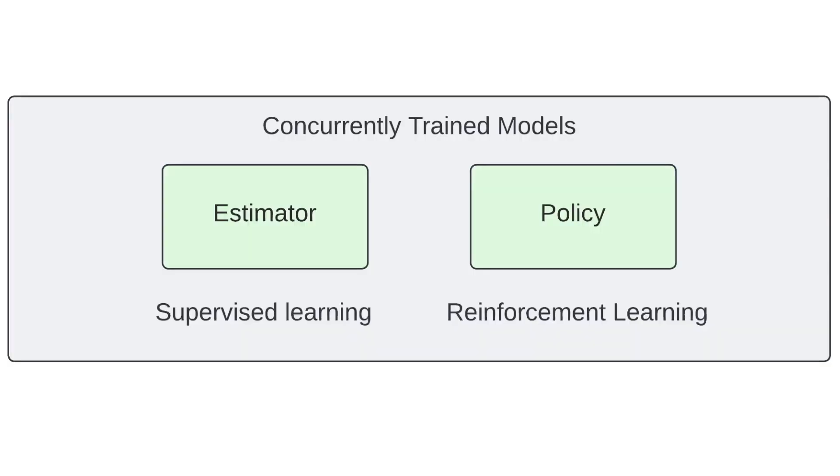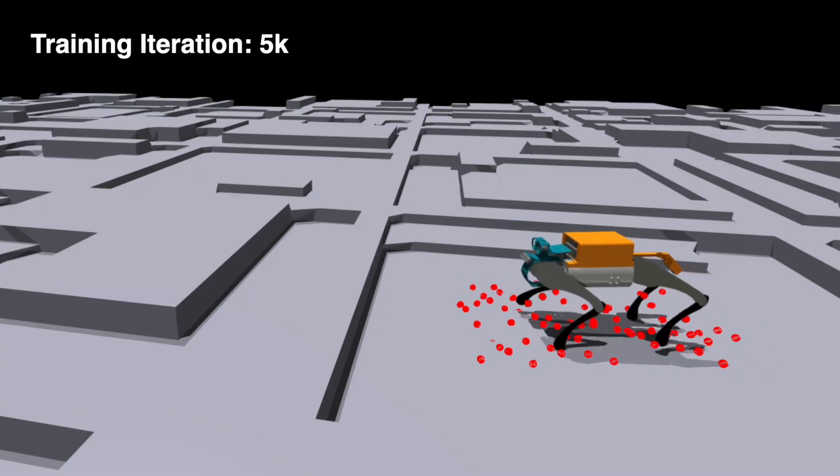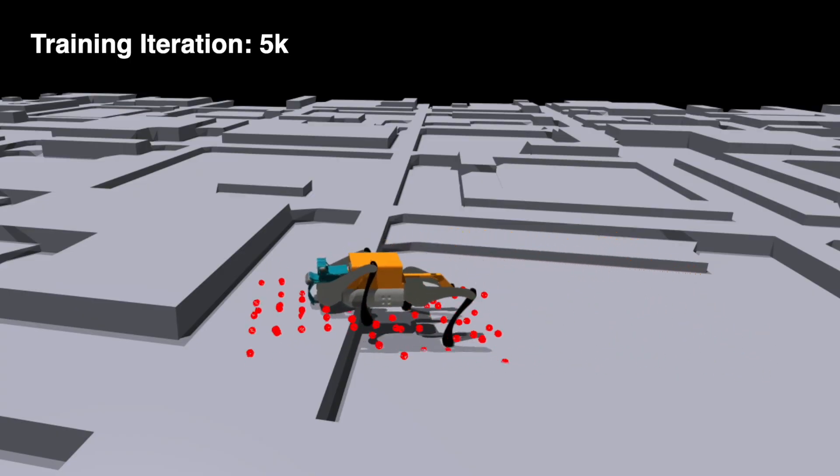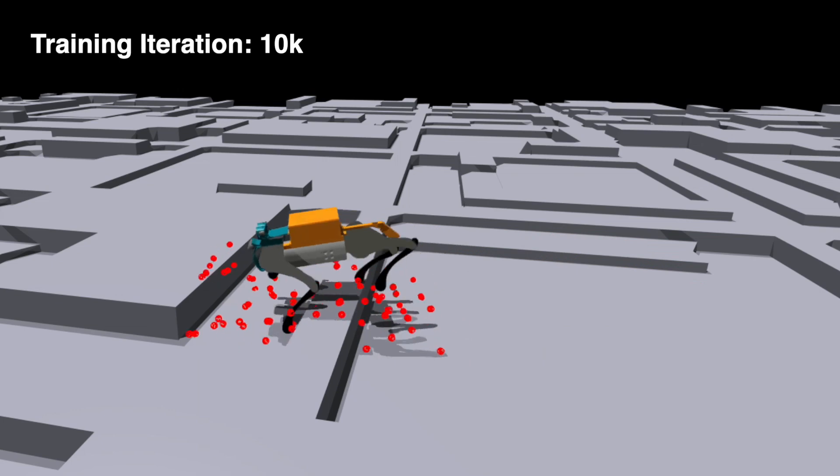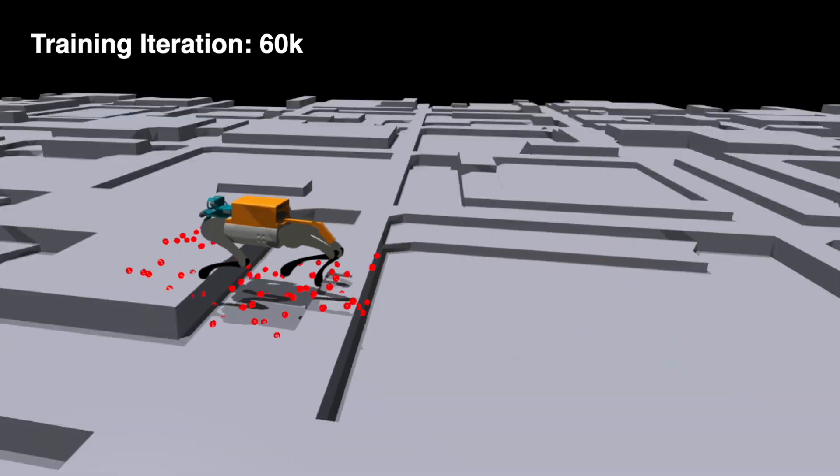We rely on a concurrently trained control policy and odometry estimator model. The training environment includes realistic observation noise and domain randomization for better adaptability to the real world.